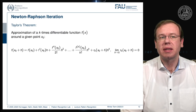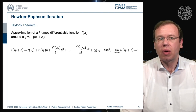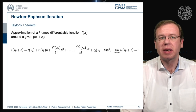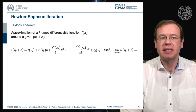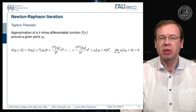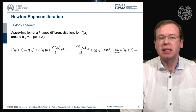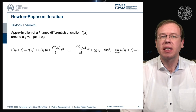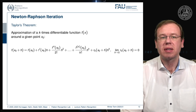Let's start discussing the Newton-Raphson iteration. This is essentially motivated by Taylor's theorem, and it's a way of approximating a k times differentiable function f of x. If you have some initial point x0, then the Taylor approximation tells us that f of x0 plus h equals f of x0 plus the first derivative at x0 times h plus the second derivative at x0 times h squared divided by factorial 2, and we can go on with this until we have the complete Taylor series all the way to k.